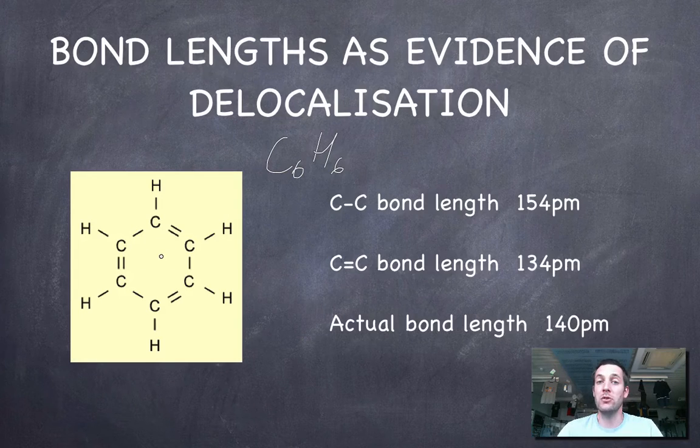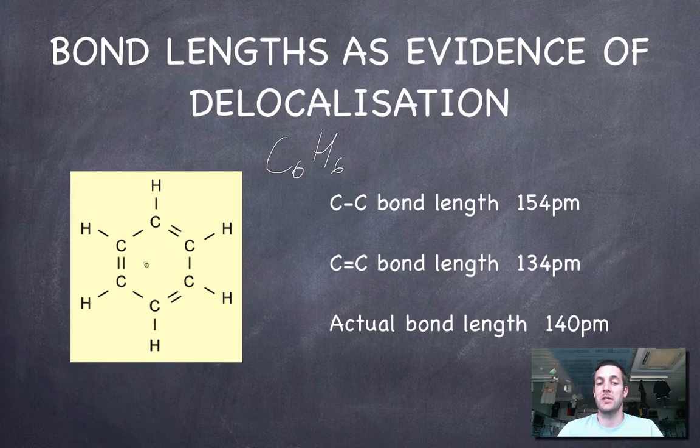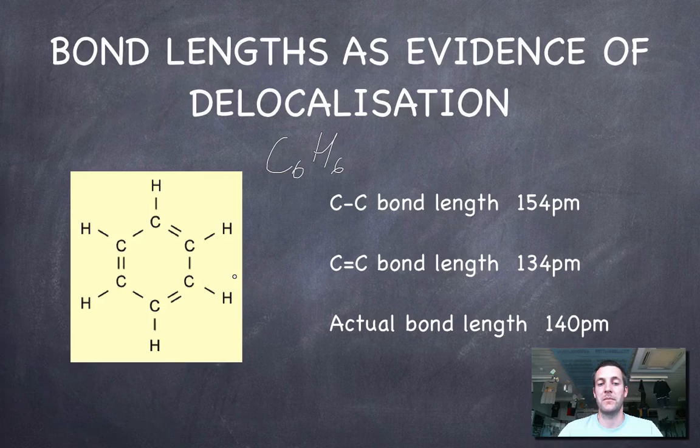That would suggest that this way of representing benzene with alternating single and double bonds can't really, although it might work as a Lewis diagram, give us an accurate reflection of the true situation because this would mean there'd be different length bonds and the hexagon would be lopsided, whereas it's not. We discover that it's a very regular hexagon and all the bonds are the same length, somewhere between these two.